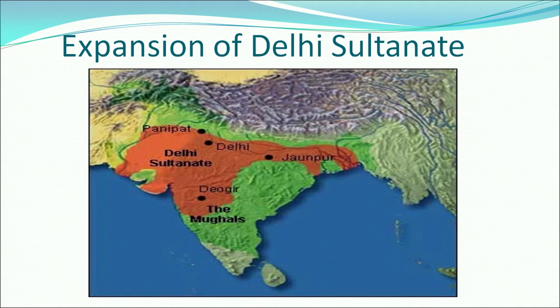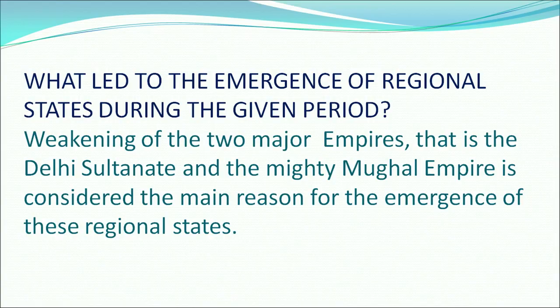With the expansion of the Delhi Sultanate, the regional states that existed at the time became part of the Delhi Sultanate. We will discuss what led to the emergence of regional states during the given period. The main reason was the weakening of two major empires — the Delhi Sultanate and the mighty Mughal Empire — which led to the emergence of regional states.